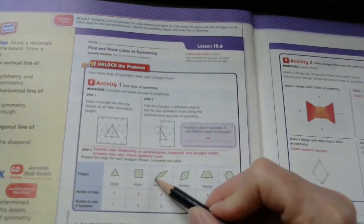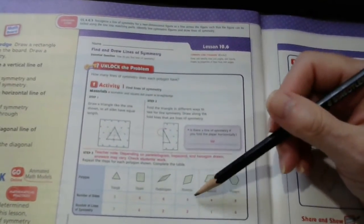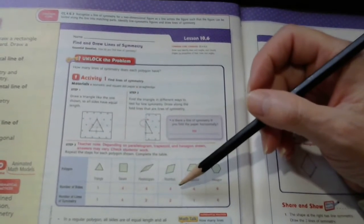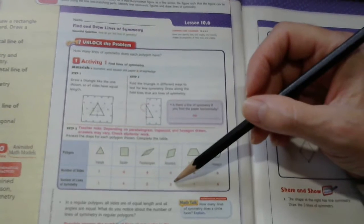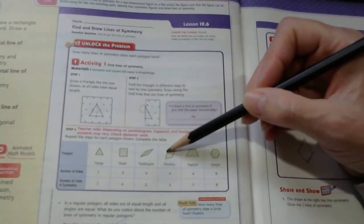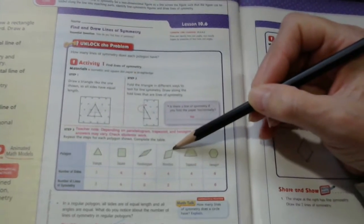One straight down, and one going to the other end. Rhombus is a very similar situation. Number of sides, four. And the number of lines of symmetry, two. One, two.